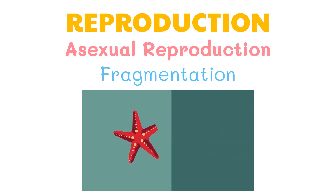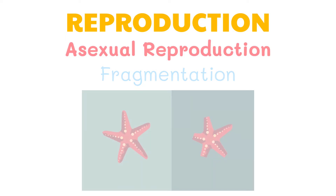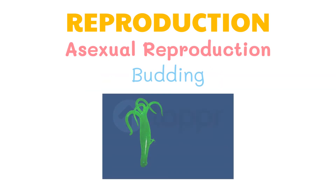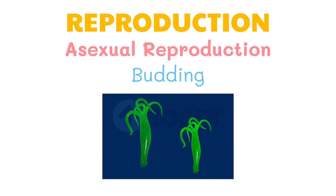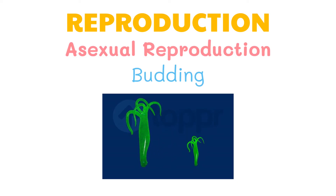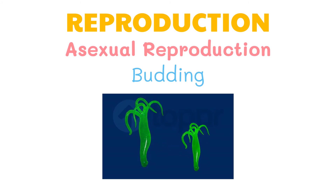Starfish, however, are also capable of sexual reproduction. Budding occurs when a parent cell forms a bubble-like bud. The bud stays attached to the parent cell while it grows and develops. When the bud is fully developed, it breaks away from the parent cell and forms a new organism. An example of this is budding in hydra.